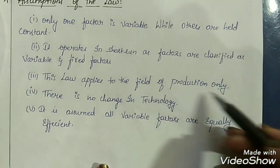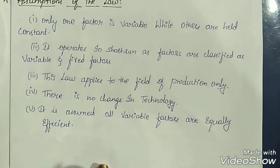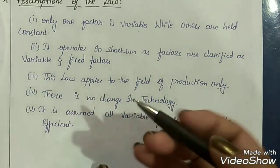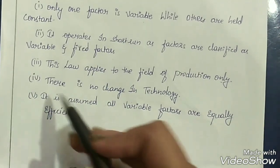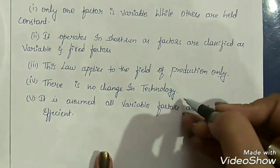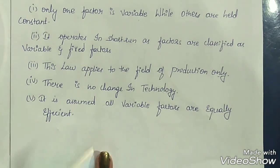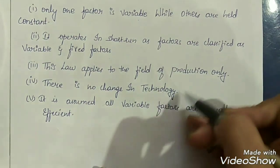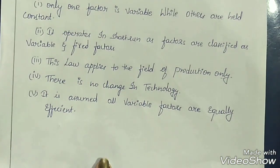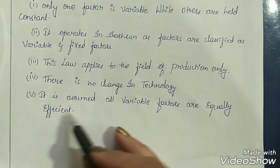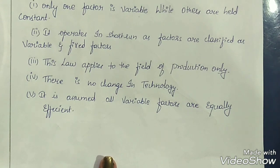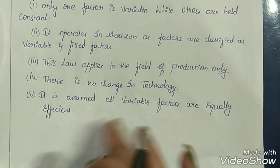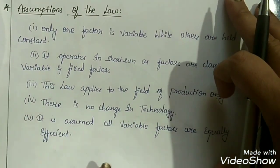Third assumption: this law applies to the field of production only — it is not applicable in the case of trading or the service sector. It applies only where production activities are carried on, whether agricultural or industrial. Fourth assumption: there is no change in technology. The technology used for the production process must remain constant with no updates, as changes may lead to differing outputs. Finally, all variable factors are assumed to be equally efficient — meaning the labors employed must be equal in terms of skills, talent, knowledge, and training.